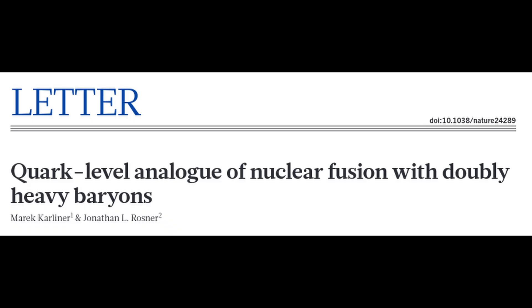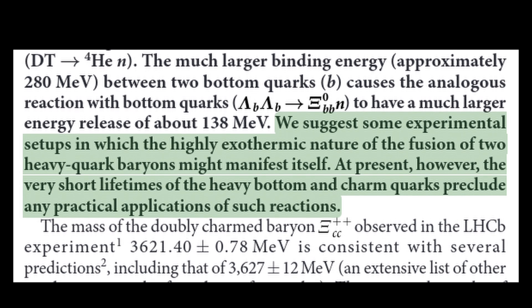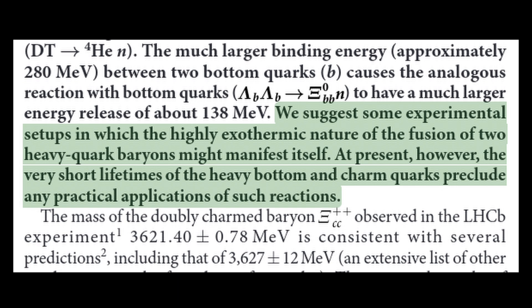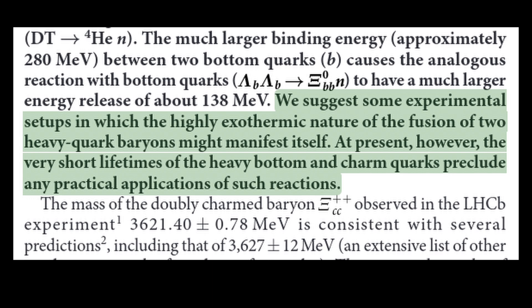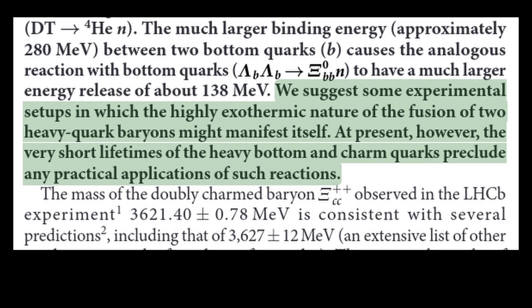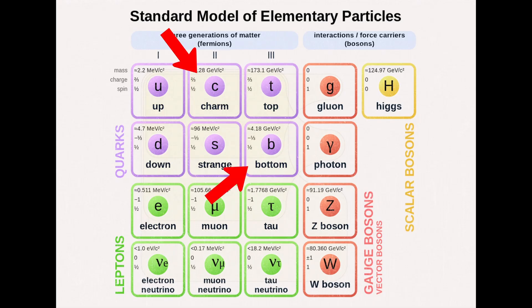A paper by Merrick Carliner and Jonathan Rosner proposed a method to do something analogous to classical fusion using quarks. They say, 'We suggest some experimental setups in which the highly exothermic nature of the fusion of two heavy quark baryons might manifest itself. At present, however, the very short lifetimes of the heavy bottom and charm quarks preclude any practical application of such reaction.' A baryon is a particle of three quarks. Essentially, if we could get baryons with two of these heavier quarks, we could get a reaction that produces eight times as much energy as classical fusion.